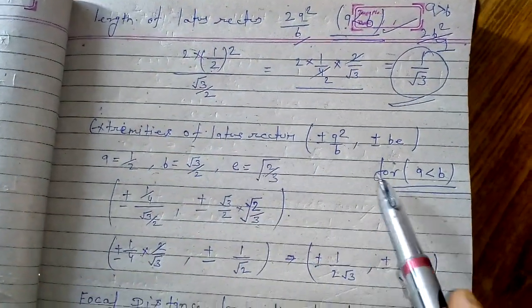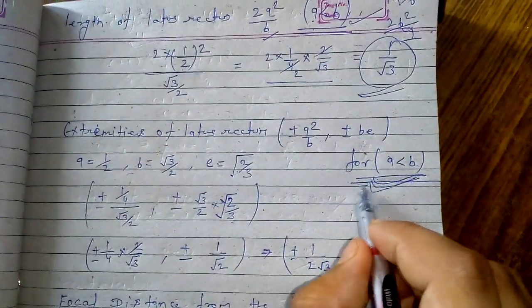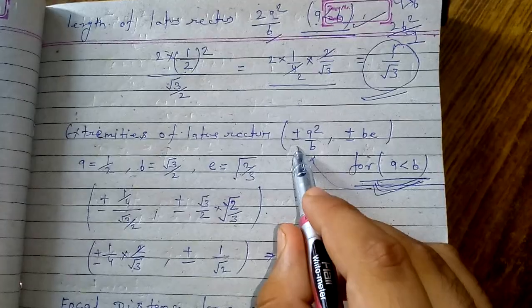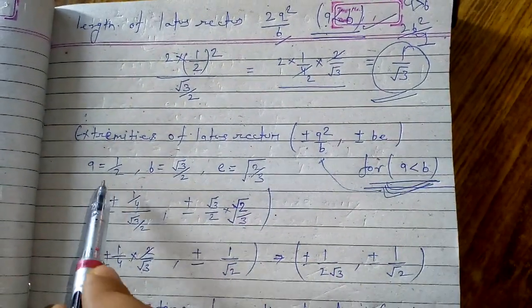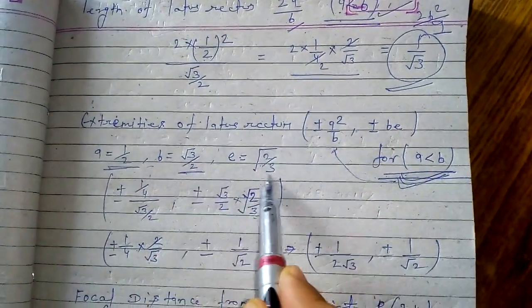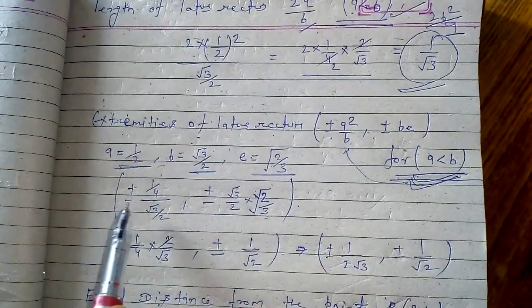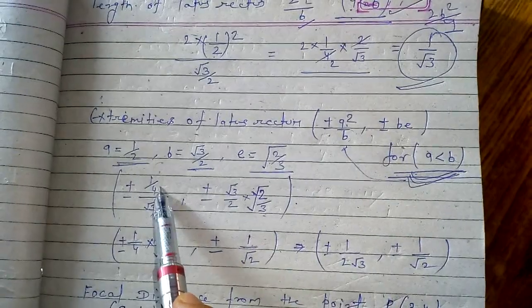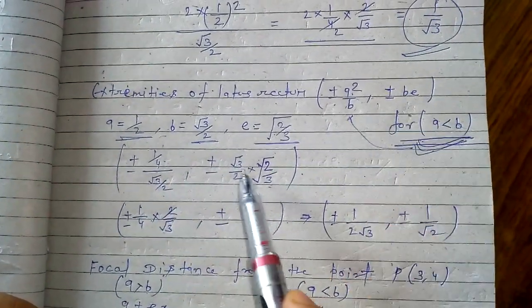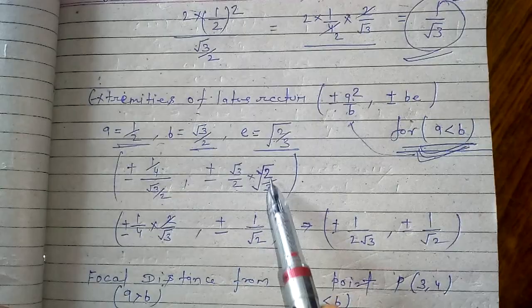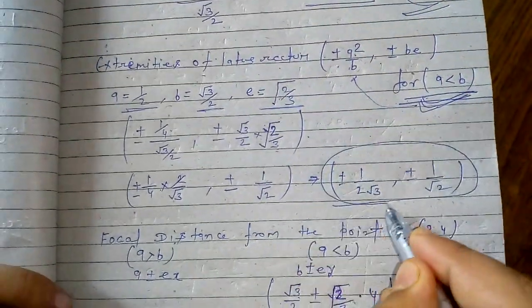For the extremities of the latus rectum, since a is less than b we apply the formula (±a squared by b, ±be). With a equal to 1 by 2, b equal to root 3 by 2, and eccentricity equal to root 2 by 3: a squared is 1 by 4, b is root 3 by 2, and be equals root 3 by 2 times root 2 by 3. We simplify to get the coordinates of the extremities of the latus rectum.